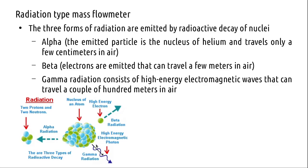Alpha radiation consists of helium nuclei — heavy particles that travel only a few centimeters in free space. Beta radiation comprises high-energy electrons. Gamma radiation is of much higher energy and can travel several hundred meters; it can be stopped by lead shielding but passes through most other materials. The question of whether gamma radiation causes harm to nearby operators is addressed by keeping dosage within safe limits.